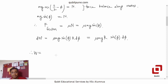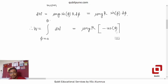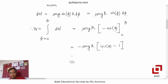The total work done is the integral of this expression as phi changes from 0 to theta. Since mu, g, m, and r are all constants, we integrate sine phi. The integral of sine phi with respect to phi is negative cos phi. Evaluating from 0 to theta gives negative of (cos theta minus cos 0), which is negative of (cos theta minus 1). So the total work done equals mu mg r times (1 minus cos theta).